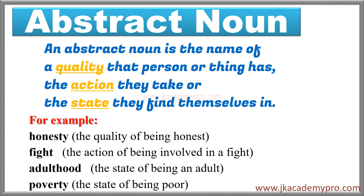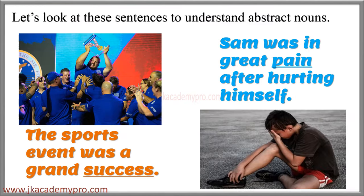Abstract noun. An abstract noun is a name of a quality that a person or thing has, the action they take, or the state they find themselves in. For example: honesty is the quality of being honest, fight is the action of being involved in a fight, adulthood is the state of being an adult, and poverty is the state of being poor. 'The sports event was a grand success.' Here, success is an abstract noun. 'Sam was in great pain after hurting himself.' Here, pain is an abstract noun.